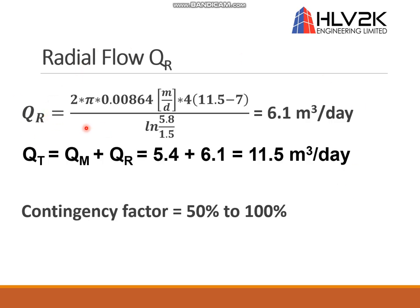For radial flow, substituting the numbers into the equation, the estimated flow rate is 6.1 cubic meters per day. Adding these two components together, we end up with 11.5 cubic meters per day for the dewatering rate to lower the groundwater 1 meter below the bottom of the excavation for this trench with 100 meters length and 3 meters width. As discussed last time, we have to add a contingency factor, usually between 50 and 100 percent, depending on the variability and uncertainty in our input parameters.